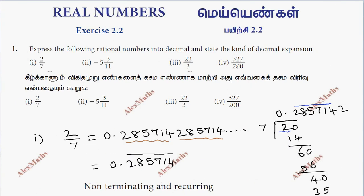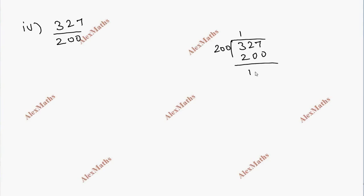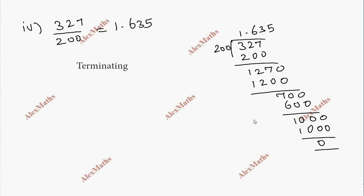Next is 327 by 200. Dividing: 1 times 200, remainder 127. Decimal point — 6 times 1200, remainder 70. 3 times 600, remainder 100. 5 times 1000, remainder 0. So the result is 1.635. This is terminating.